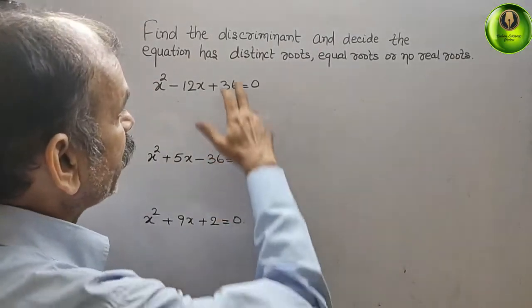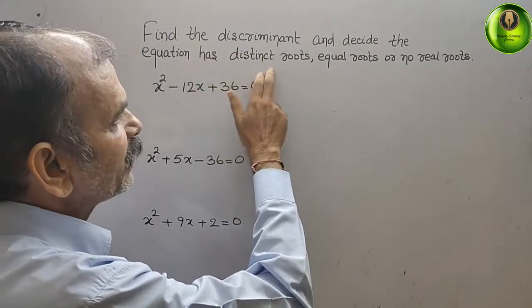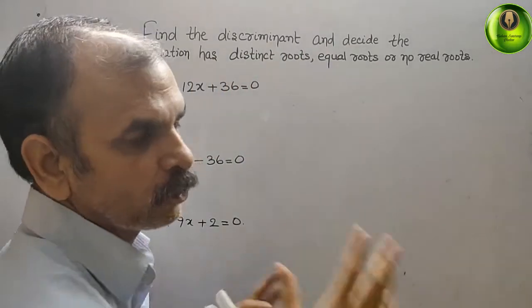Your question is, find the discriminant and decide the equation has distinct roots, equal roots, or no real roots.